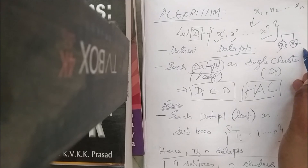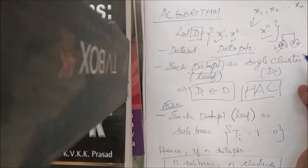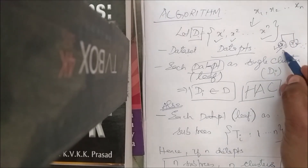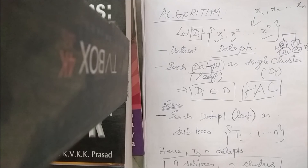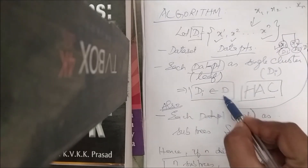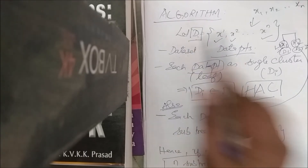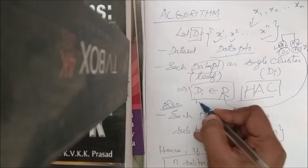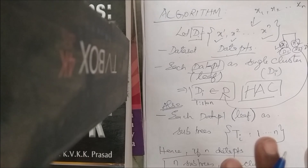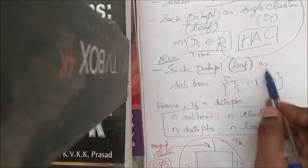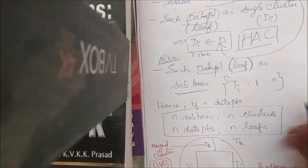Each data point is called a single cluster, also called a leaf. So if each data point is a cluster, we say d1, d2, ... dn, which belong to the master dataset D. We write: di where i is 1 to n, belongs to D. This is the basic notation.